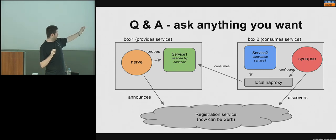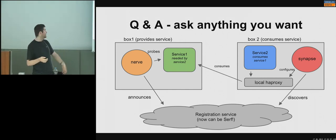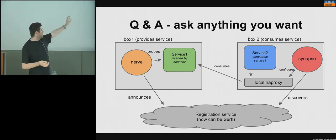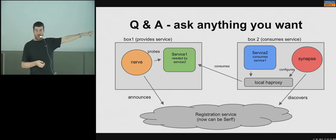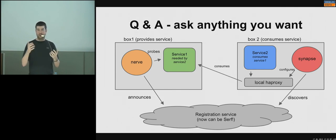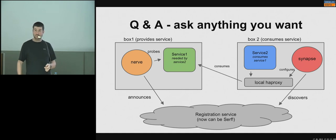There are actually two sorts of probes. Nerve does a full health check — because it's only local to the machine, it can run for maybe a full second and do slightly heavy checks — then announces it to Serf or ZooKeeper. Whereas HA Proxy's probe can be another URL, just a '/ping' — it's more of a connectivity check than a heavy health probe. In my experience it scales really well to hundreds and hundreds of servers.